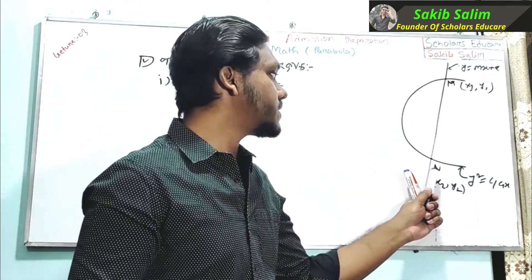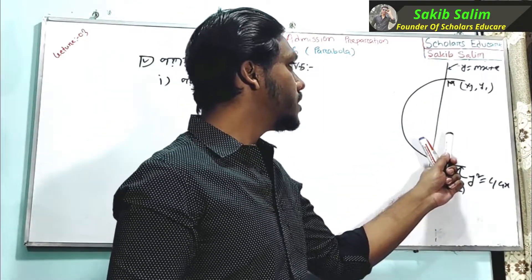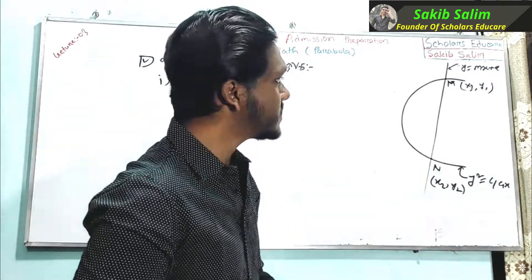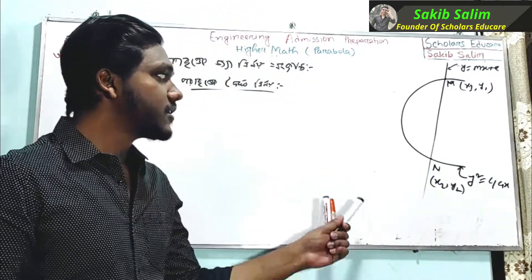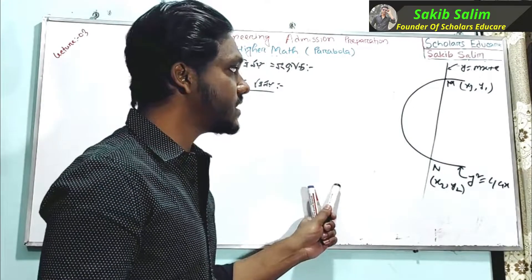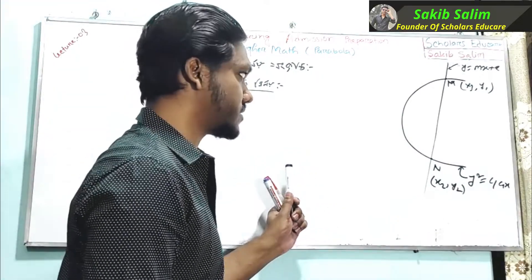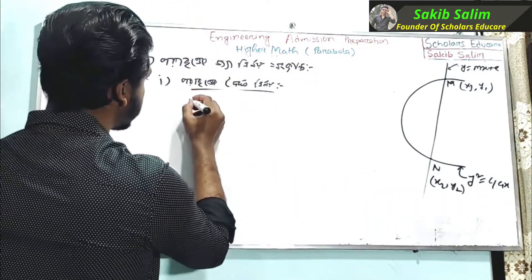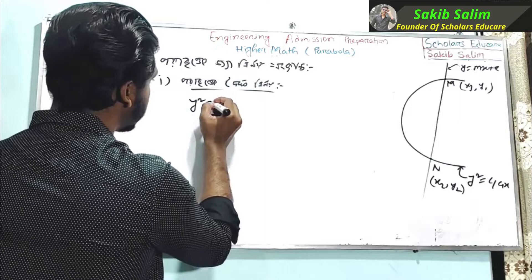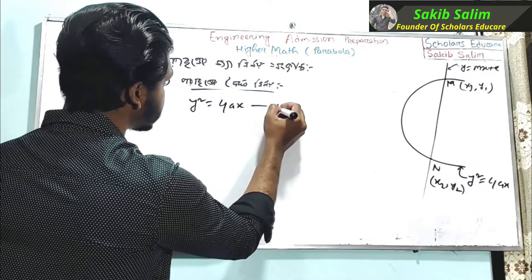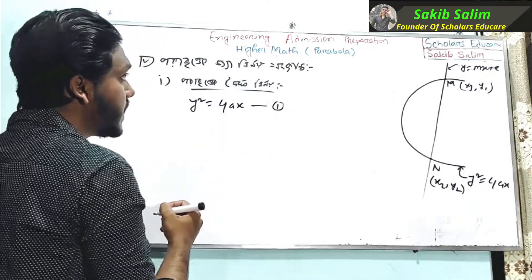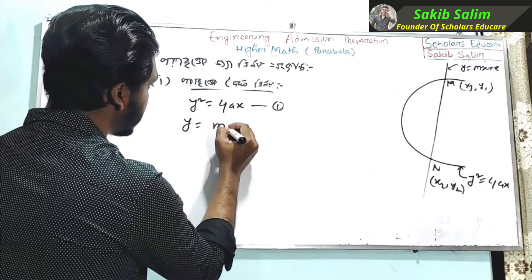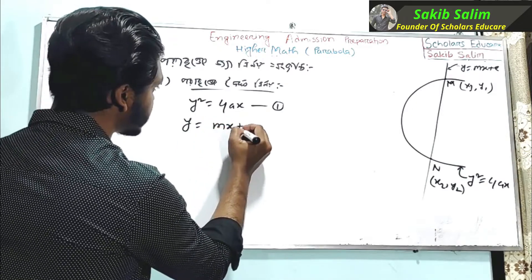So, how do we do this? First of all, we have to do this. Y is equal to 4ax. Then y is equal to mx plus c.